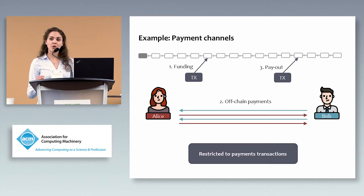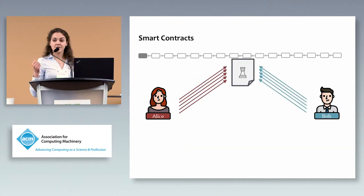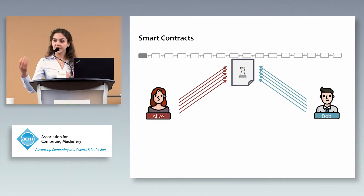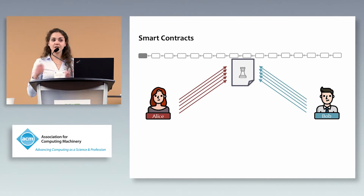However, payment channels cover only payments. As we've heard today and yesterday, payments are not the only thing we can do over the blockchain — we can do more using smart contracts. You can think of a smart contract as a small program running on the blockchain, triggered by a transaction posted on it. For example, Alice and Bob can play chess and say the winner gets one coin from the loser — this is something we can implement using smart contracts.